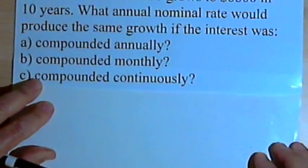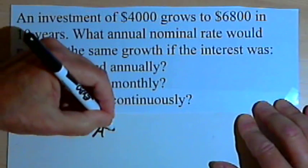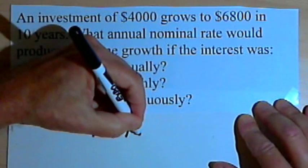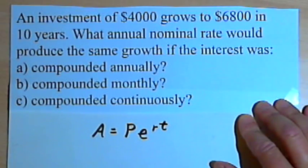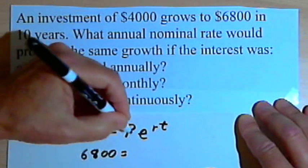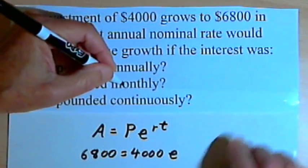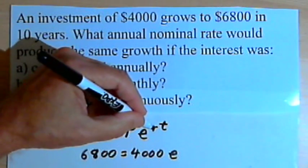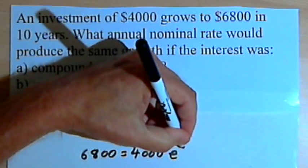Okay, the last part is what happens when we compound it continuously. So we've got a different formula for that. The formula for compounded continuously is A equals P times e raised to the rt. So A, once again, is 6,800. P is 4000. And I've got e raised to the r. I don't know what r is, but I know that t is 10. So I've got r times 10, or 10r.